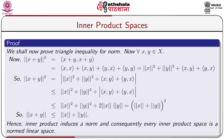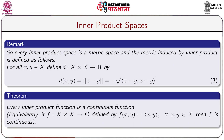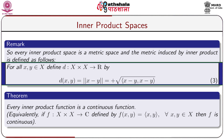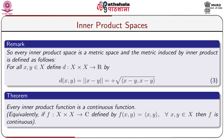Hence, inner product induces a norm and consequently every inner product space is a normed space. Every inner product space is also a metric space, and the metric induced by the inner product is defined by d(x, y) = norm of x minus y = square root of ⟨x − y, x − y⟩ for all x, y belonging to X.